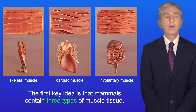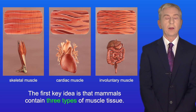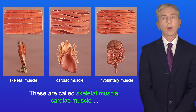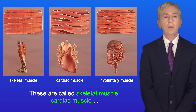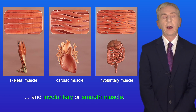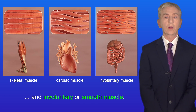The first key idea is that mammals contain three types of muscle tissue. These are called skeletal muscle, cardiac muscle, and involuntary or smooth muscle.